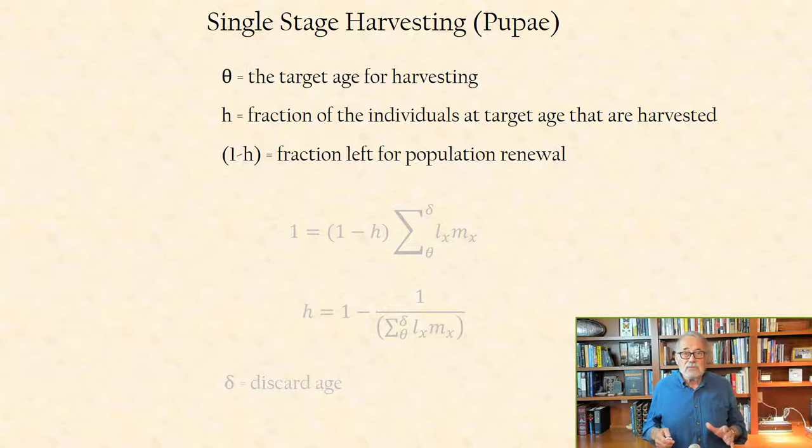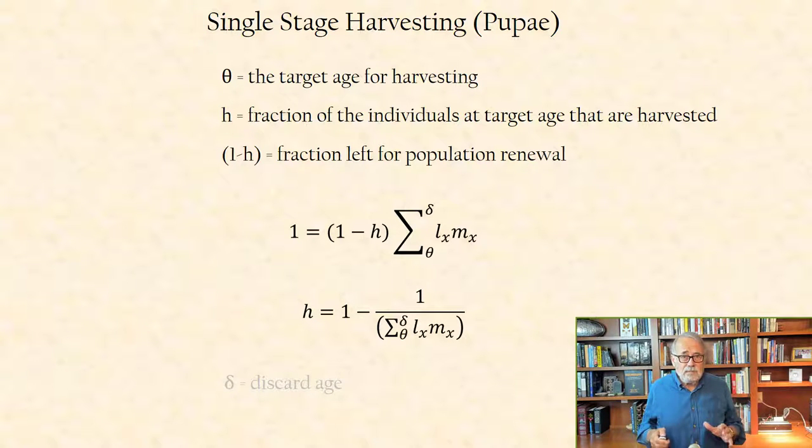The rate of harvest must confer zero population growth, so the value of H must be the solution to the equation, where the denominator in the bottom form of the equation is net reproductive rate, and delta is the discard age, i.e., the artificially imposed last day of reproduction and of life.